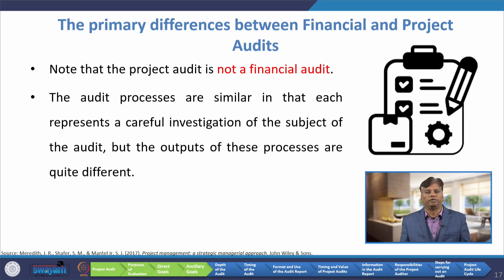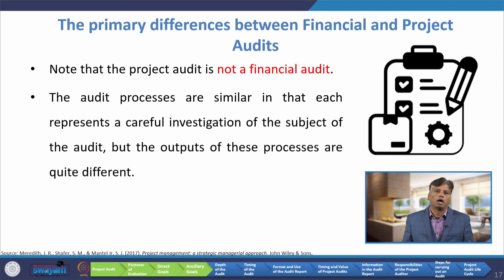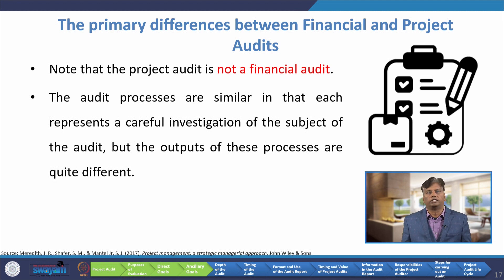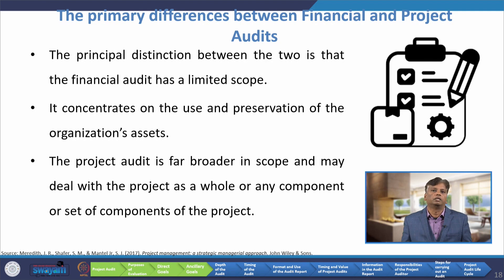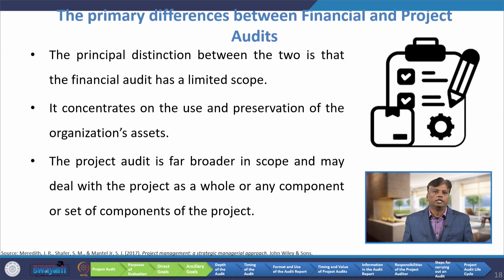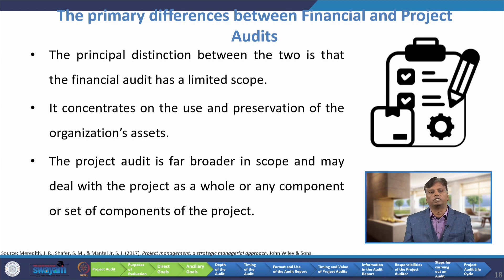Now we will discuss about the primary differences between financial audit and project audit. Note that the project audit is not the financial audit. The audit processes are similar in that each represents a careful investigation of the subject, but the output of these processes are quite different. The principal distinction is that the financial audit has a limited scope — it concentrates on the use and preservation of the organization's assets. The project audit is far broader in scope and may deal with the project as a whole or any component or set of components of the project.